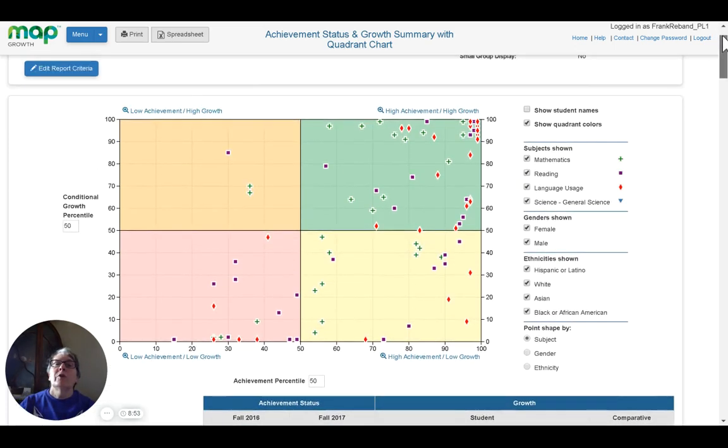The report I'm looking at has four quadrants. It is, again, we'll look at how interactive it can be. The quadrant in the upper right, the green quadrant, talks about students with high achievement and high growth. So the students in this area have high achievement and high growth.